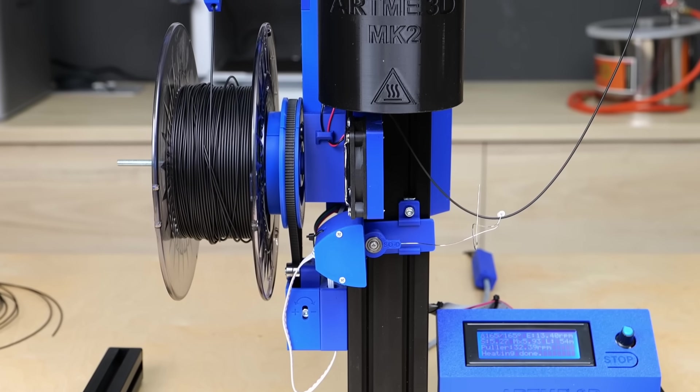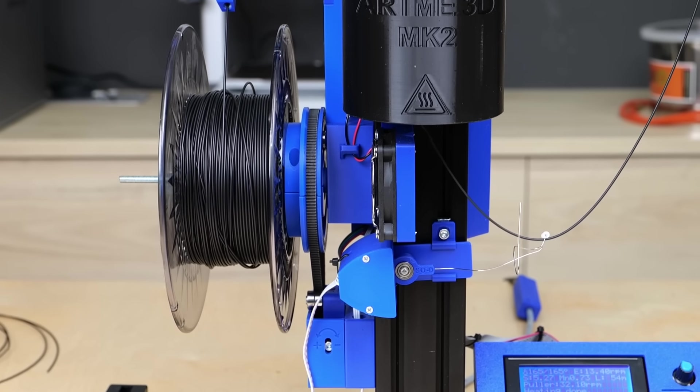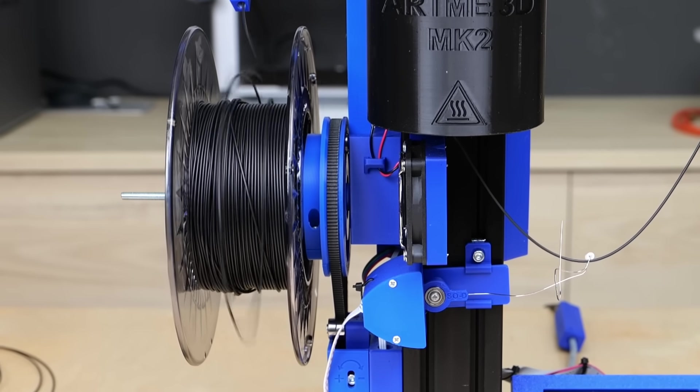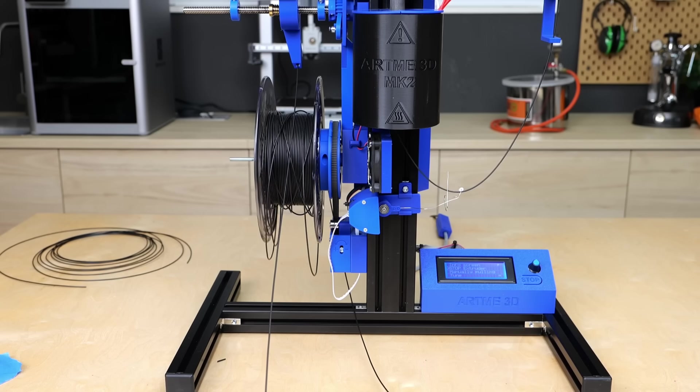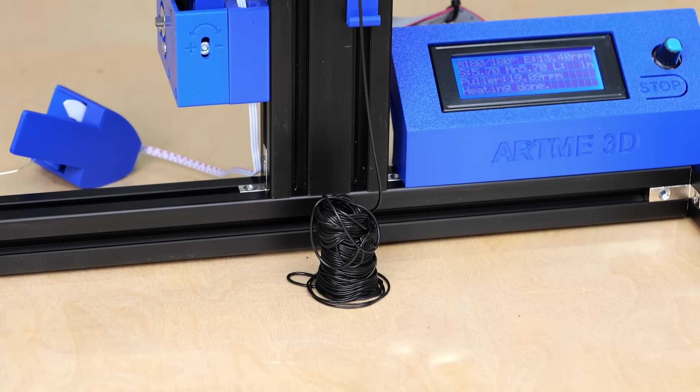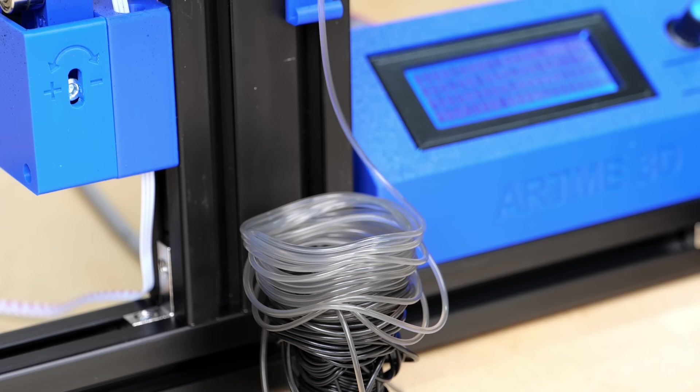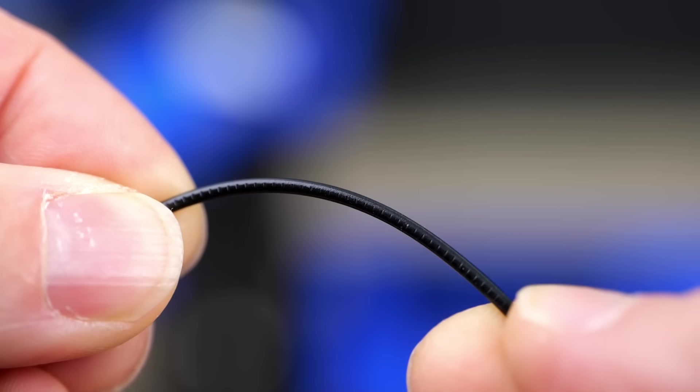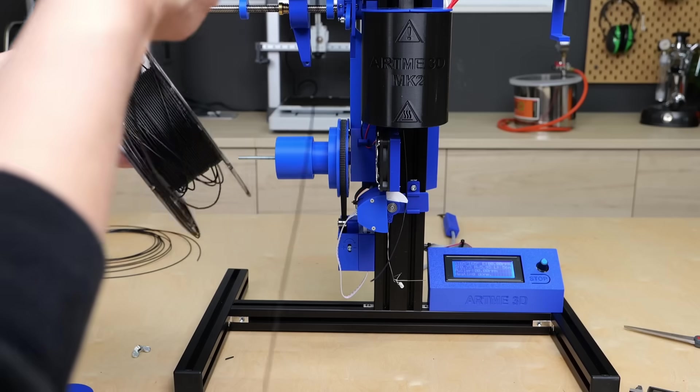This time the spooling process went well for quite a while until at some point again the filament jumped a bit and broke again. I took this as an opportunity to call it a day for the current batch, flushed out the leftover with fresh PLA pellets and inspected the result. The material was really brittle yet it seemed to be usable.